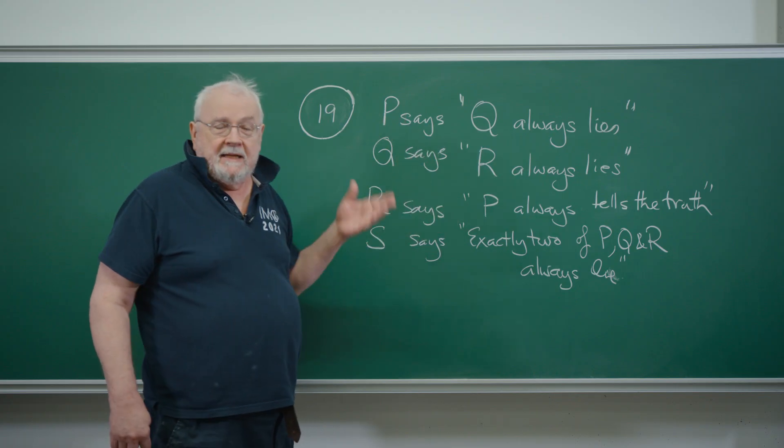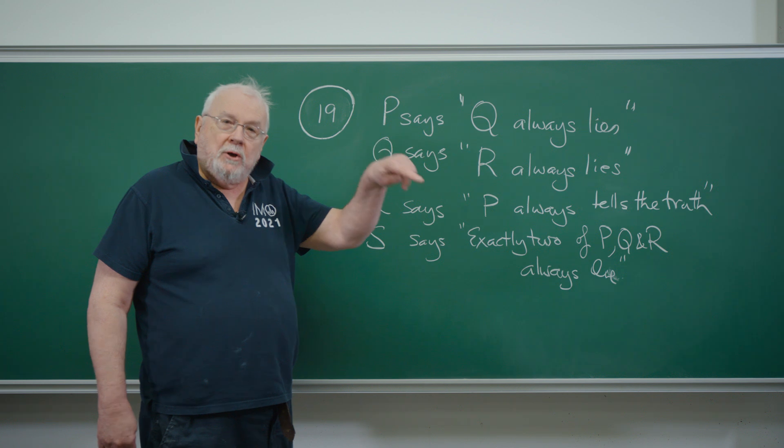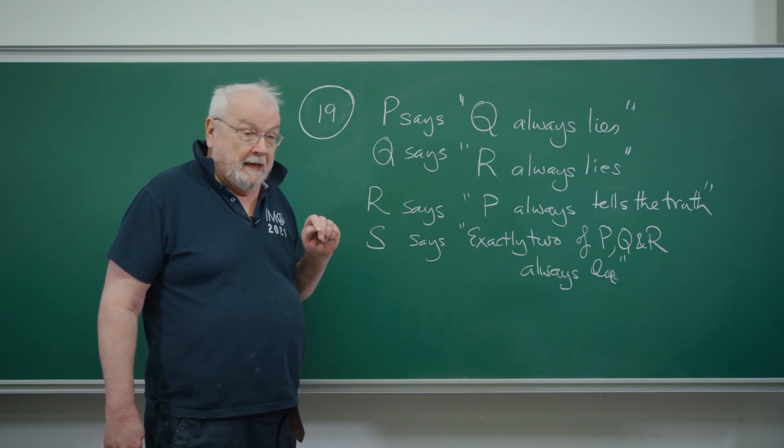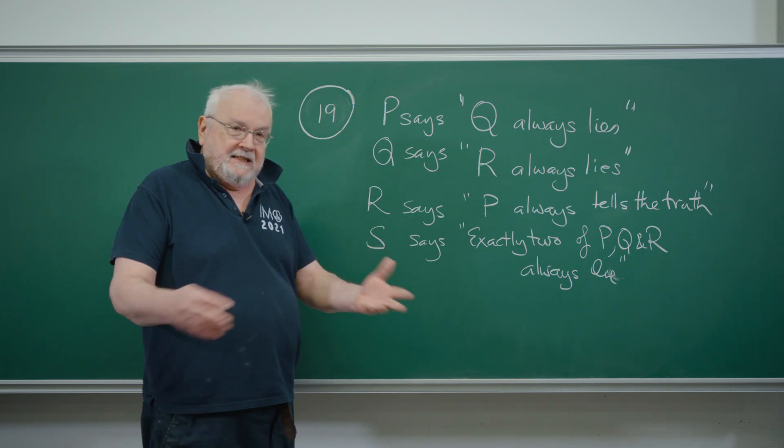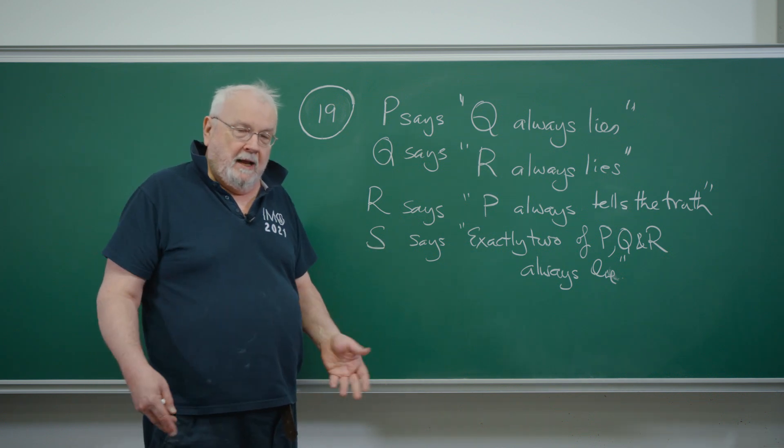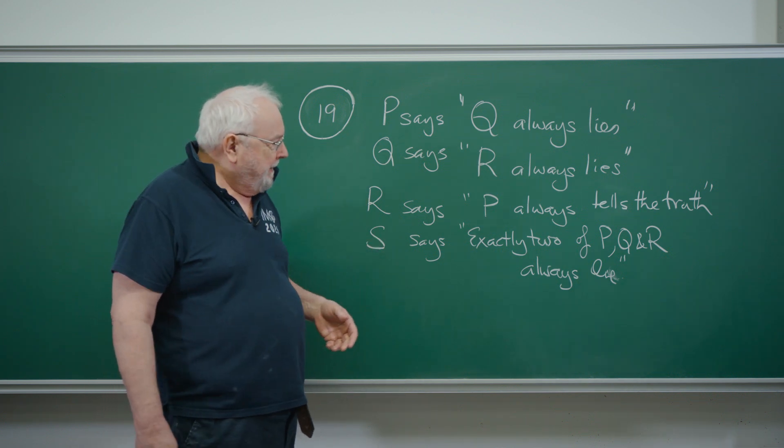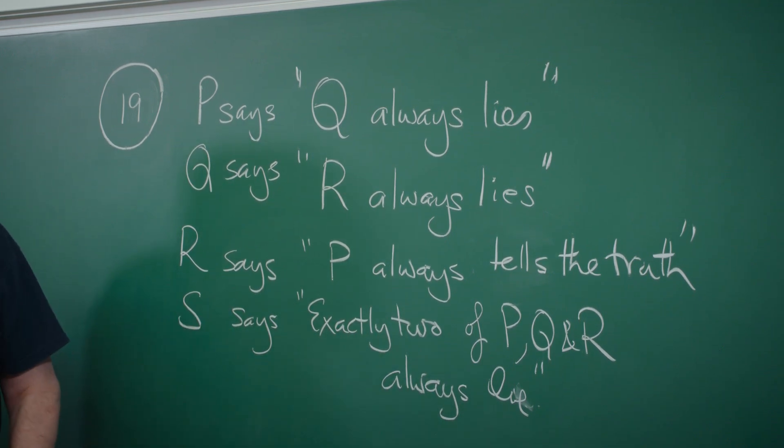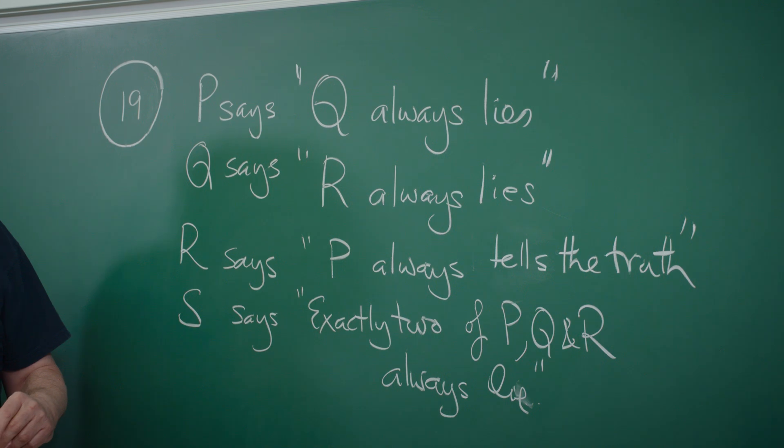It's as if they're standing in a circle and making a comment about the person in front of them about whether they're a liar or a truth-teller. S sort of stands outside this circle and looks at the overall picture, looks at P, Q and R, and S says exactly two of P, Q and R always lie.